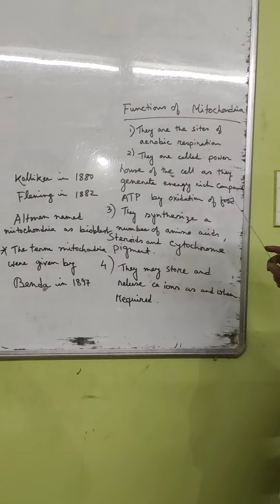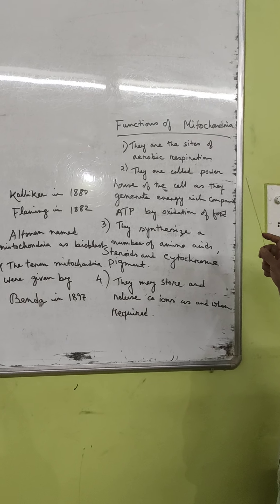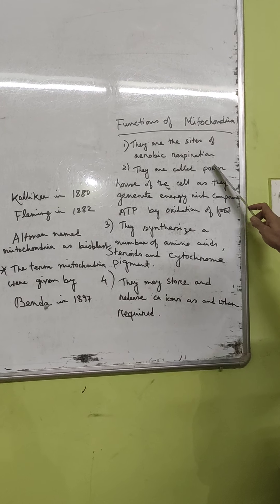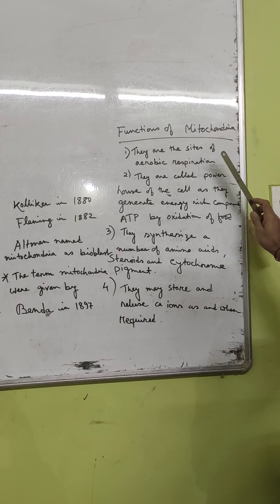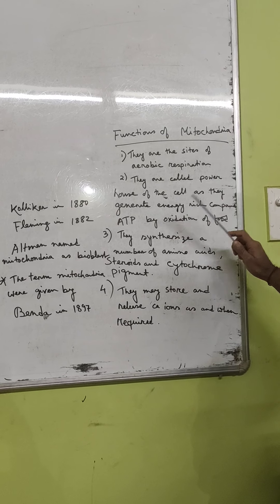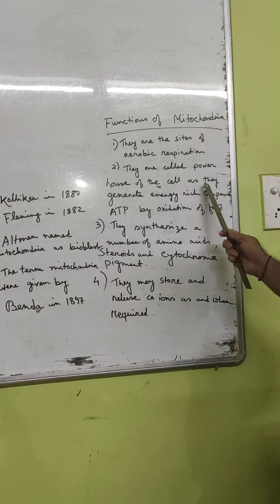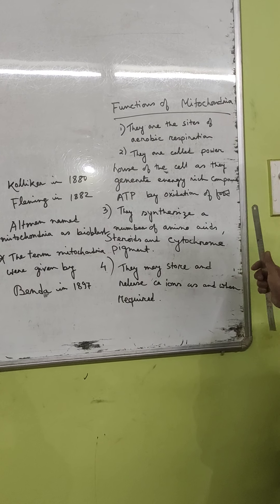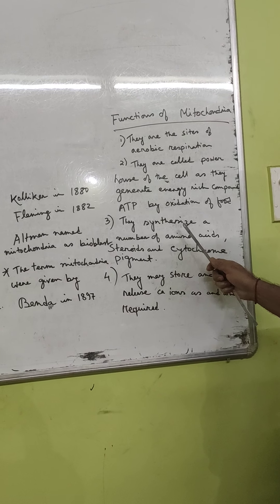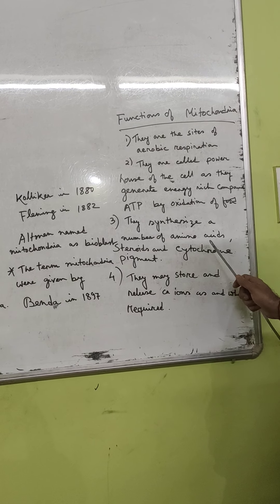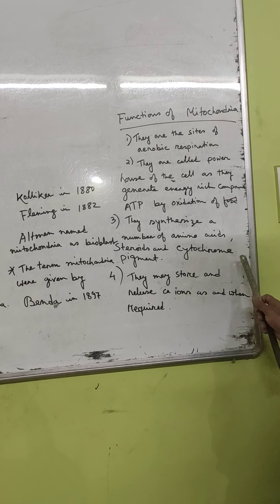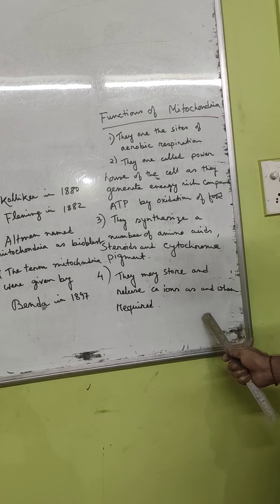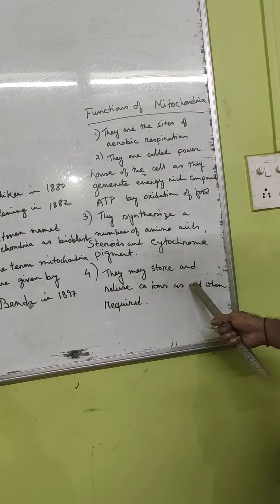Let us talk about the function of mitochondria. They are the sites of aerobic respiration, and because they generate the energy-rich compound ATP by oxidation of food - carbohydrates, proteins, fats - they are called the powerhouse of the cell. They also synthesize amino acids, steroids, and cytochrome pigments, and can store and release calcium ions as required by the cell.